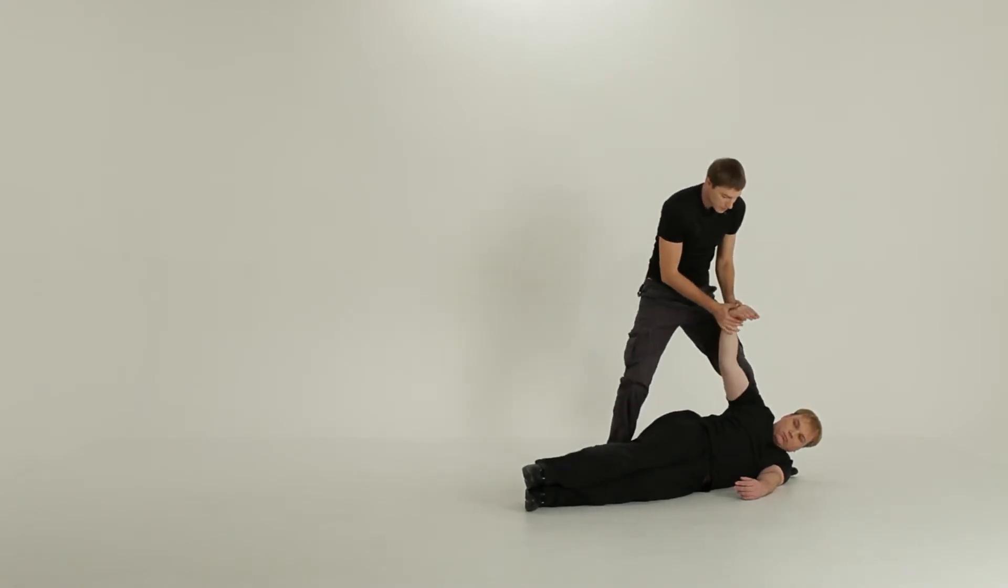On the ground, do not place your thumbs on his fingers. It's important to grab the wrist, placing thumbs on the knuckle line or just below it, ideally between the knuckles of the middle, ring, and little fingers.